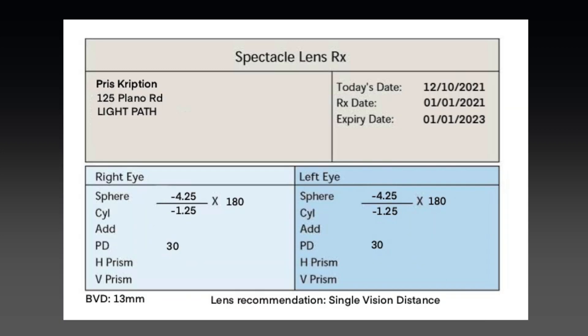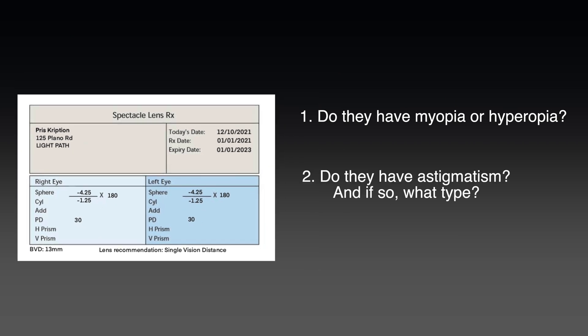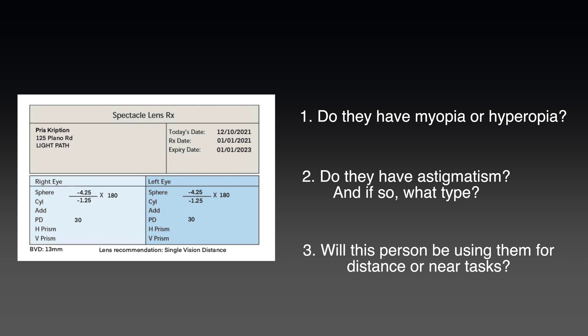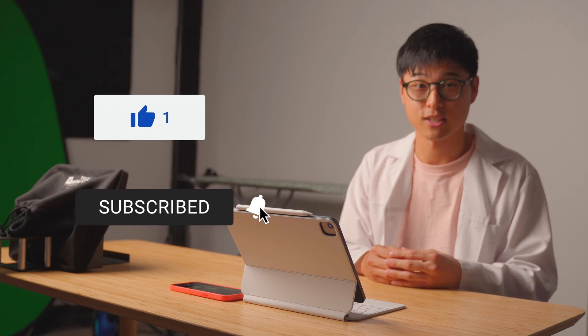I'm going to wrap up this video by leaving you with this: another made-up prescription. I want to know if you can find out what this person has. Number one, do they have myopia or hyperopia? Number two, do they have astigmatism, and if so, what type? Number three, will this person be using their glasses primarily for distance tasks such as driving and watching TV, or near tasks such as reading and working on the computer? Let me know in the comments below. But that just about does it for today. If you learned something new or found something useful, thumbs up to you. Subscribe if you haven't already and I'll see you in the next video.